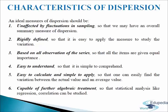Next, we come to the characteristics of dispersion. A measure of dispersion should possess all the characteristics of a good average because it is the average of the second order. An ideal measure of dispersion should be: first, unaffected by fluctuations in sampling, so that we may have an overall summary measure of dispersion; second, rigidly defined, so that it is easy to apply the measure to study the variation; and third, based on all observations of the series, so that all items are given equal importance.